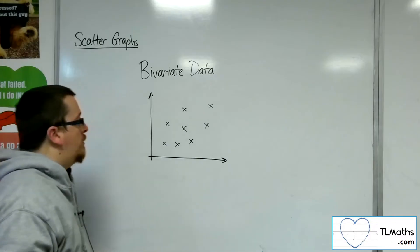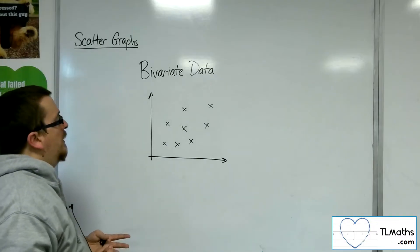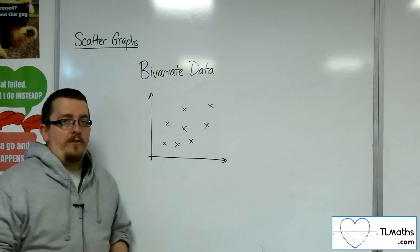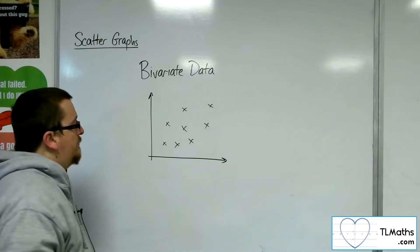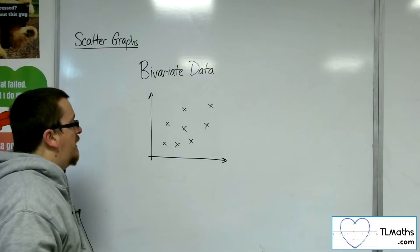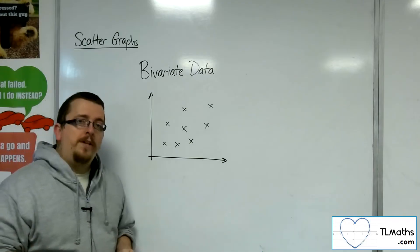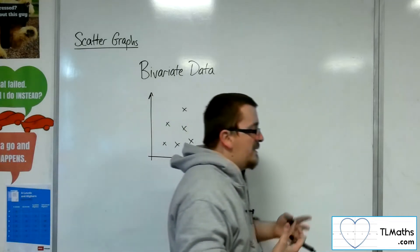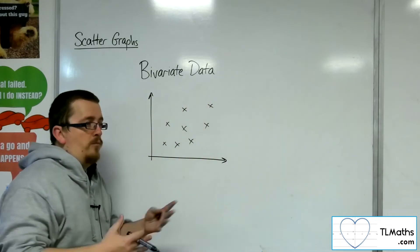So one thing that's key with bivariate data is understanding how you draw it. So if you have two variables, let's come up with a problem.